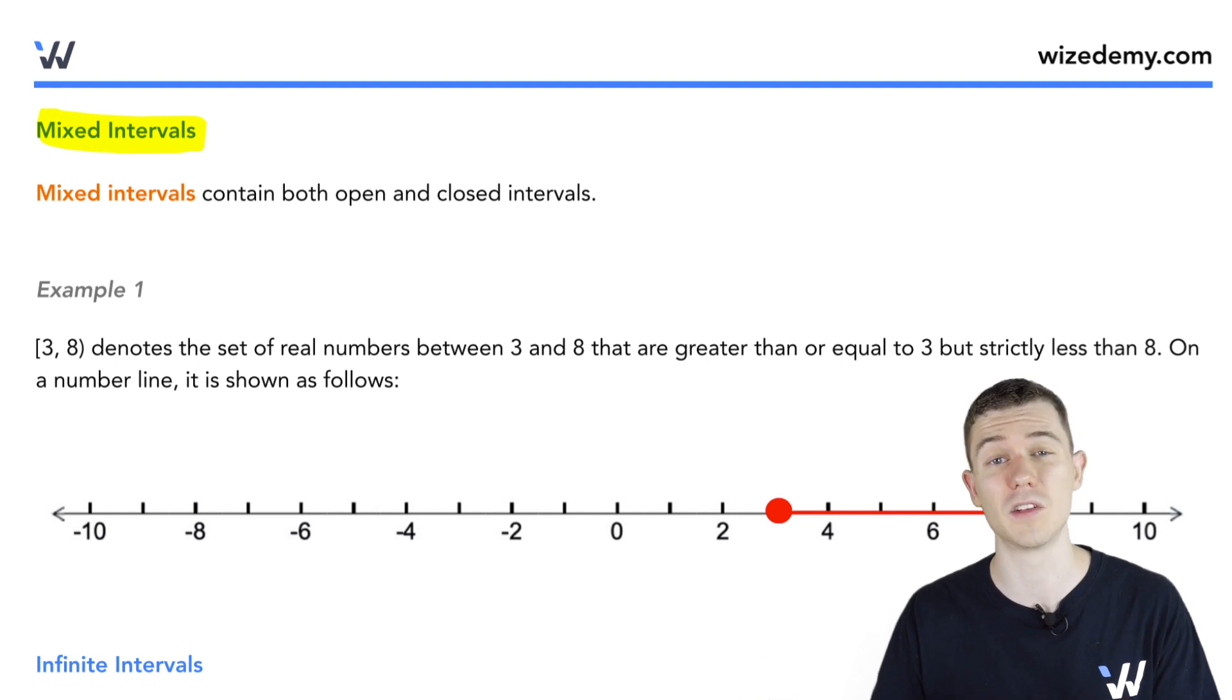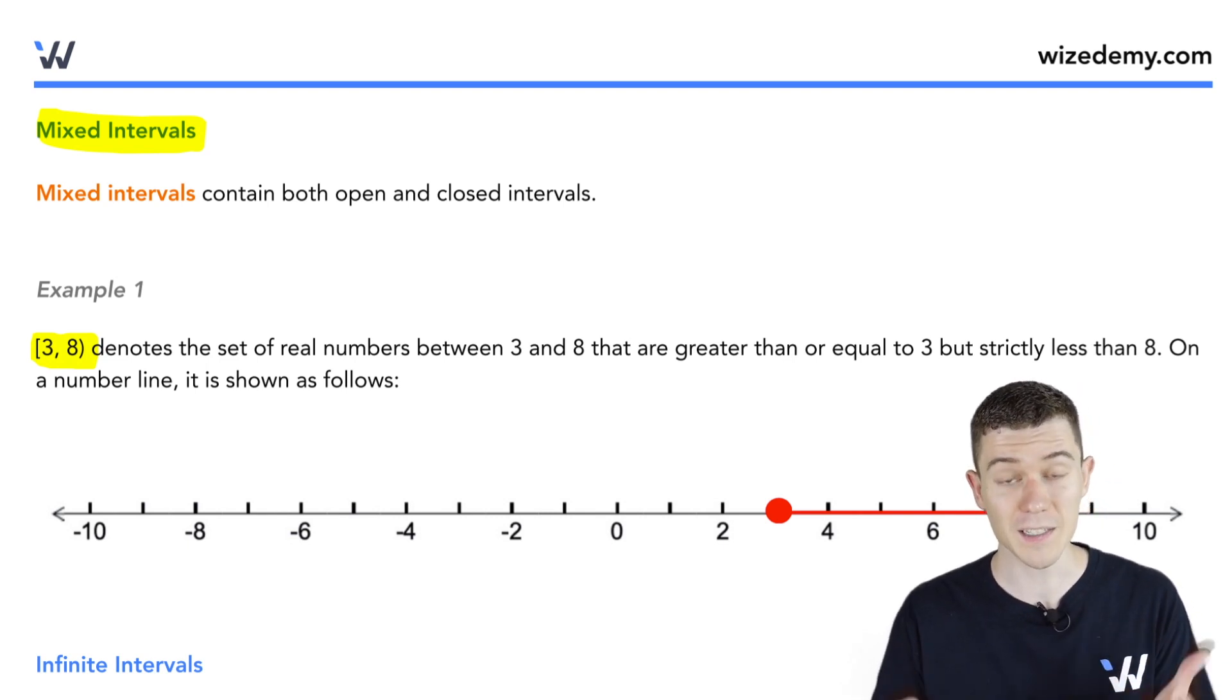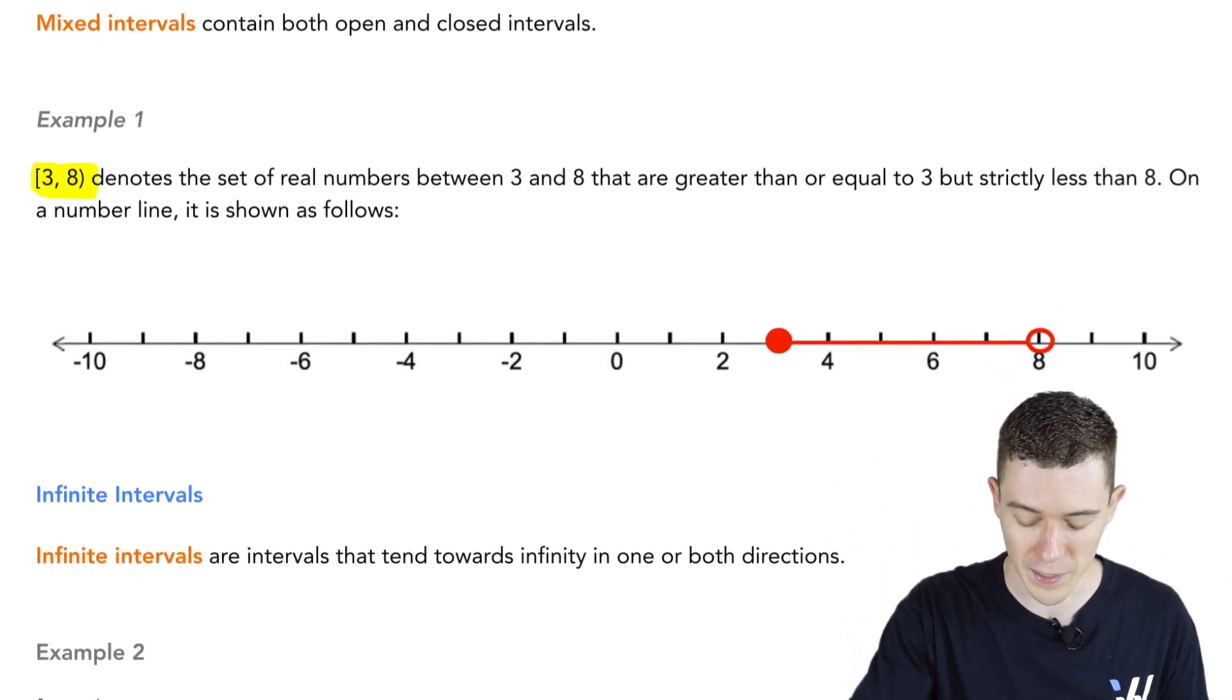This is where one endpoint is closed and the other is open. Take a look at this interval, bracket 3, comma 8, parenthesis. This is the interval 3 to 8, where 3 is included, but 8 is not. On the number line, we have this picture.